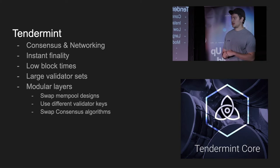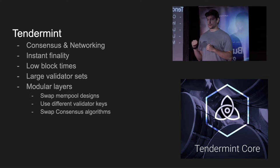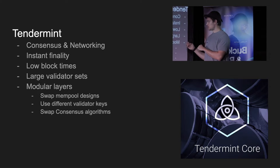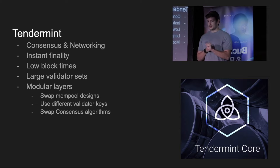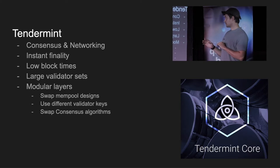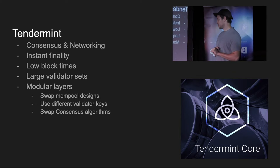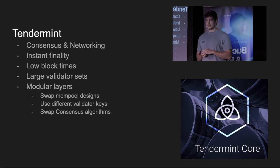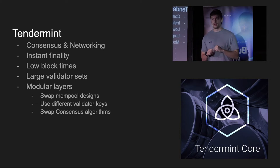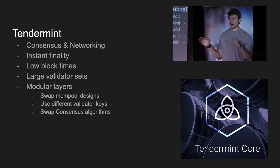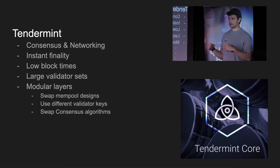What is Tendermint? Tendermint is only a consensus and networking layer. It provides instant finality and low block times. You can have large validator sets — the notion of 100 or 150 validators in the Cosmos ecosystem is entirely arbitrary, and you can go much higher, though you trade off latency and block times in that scenario.